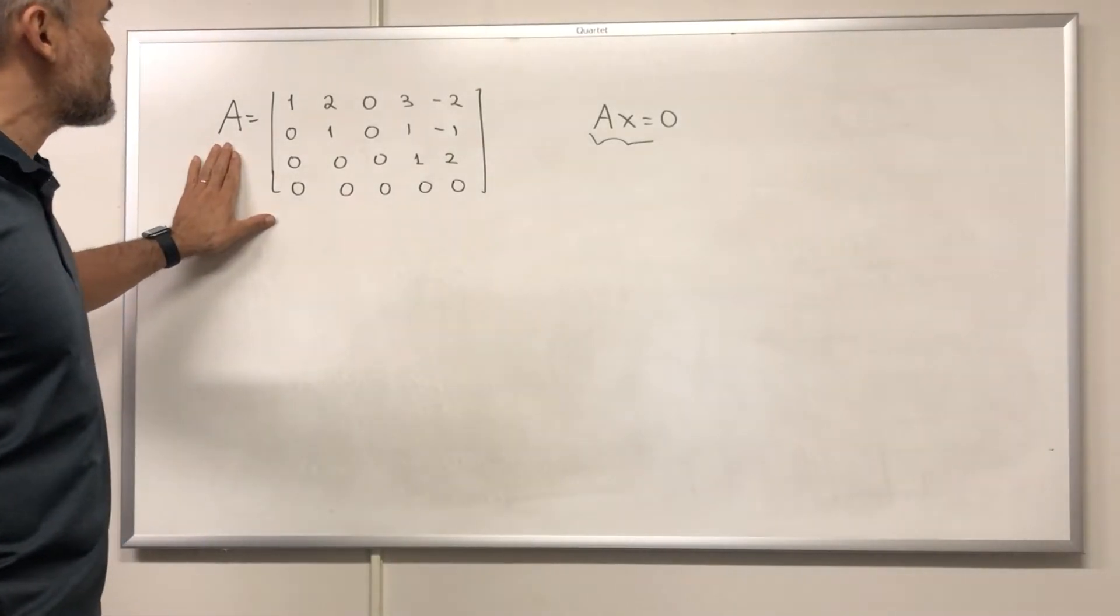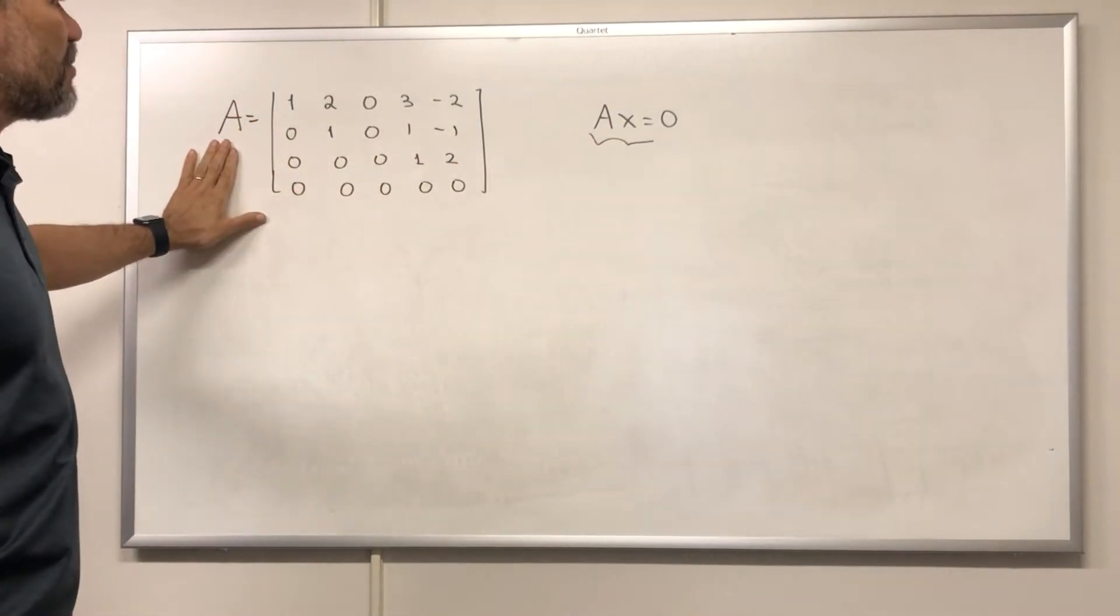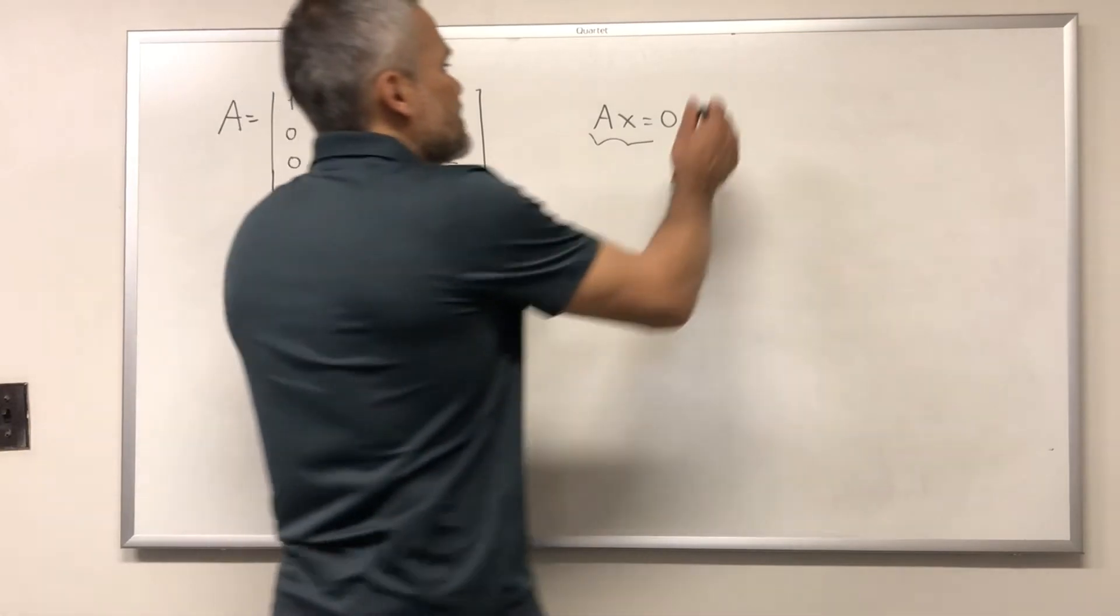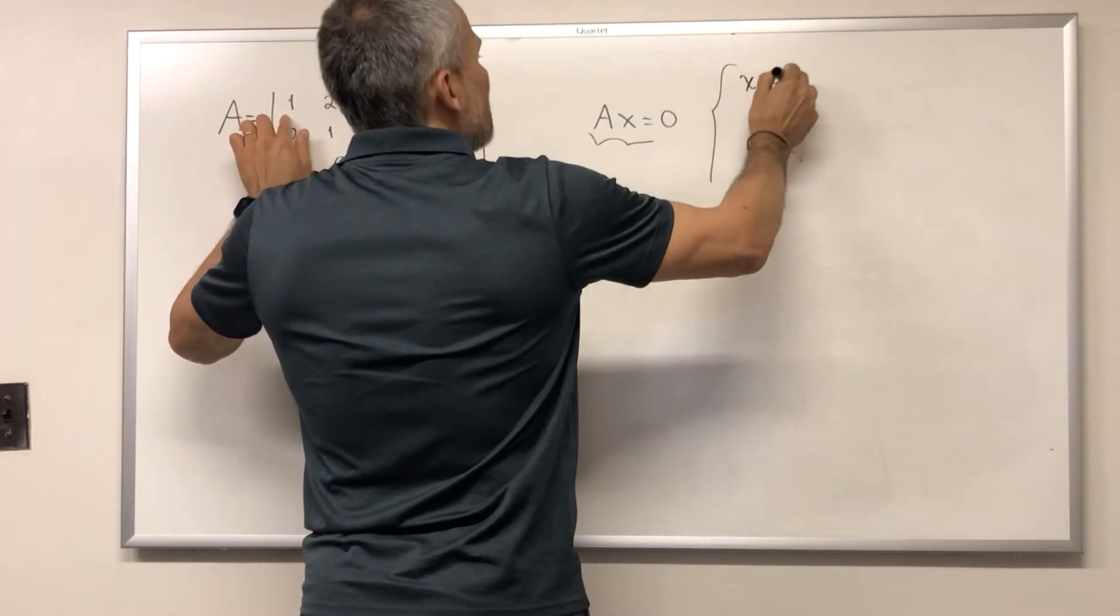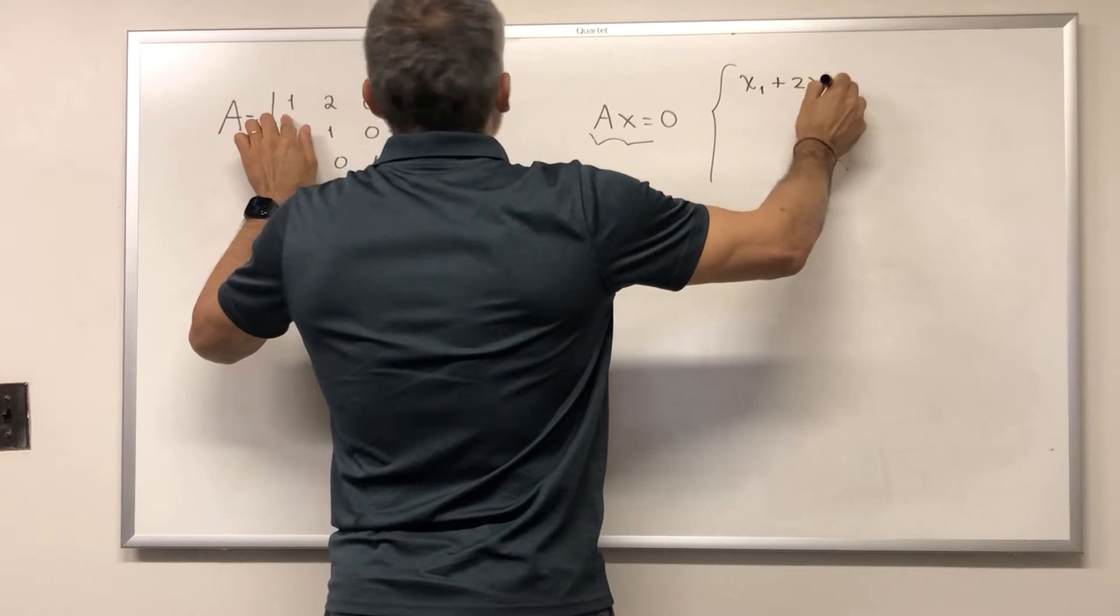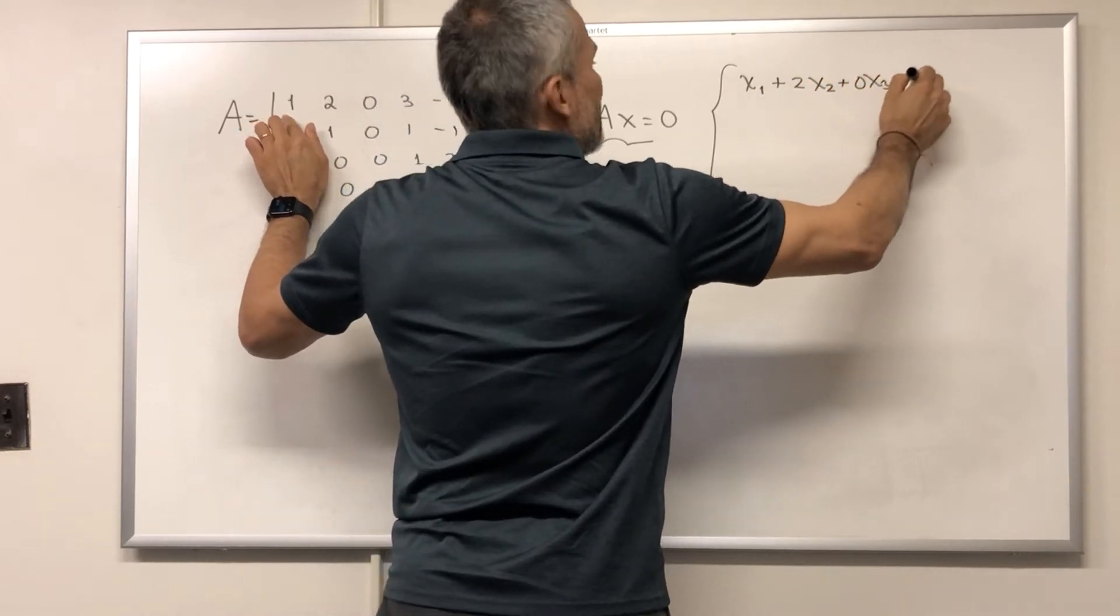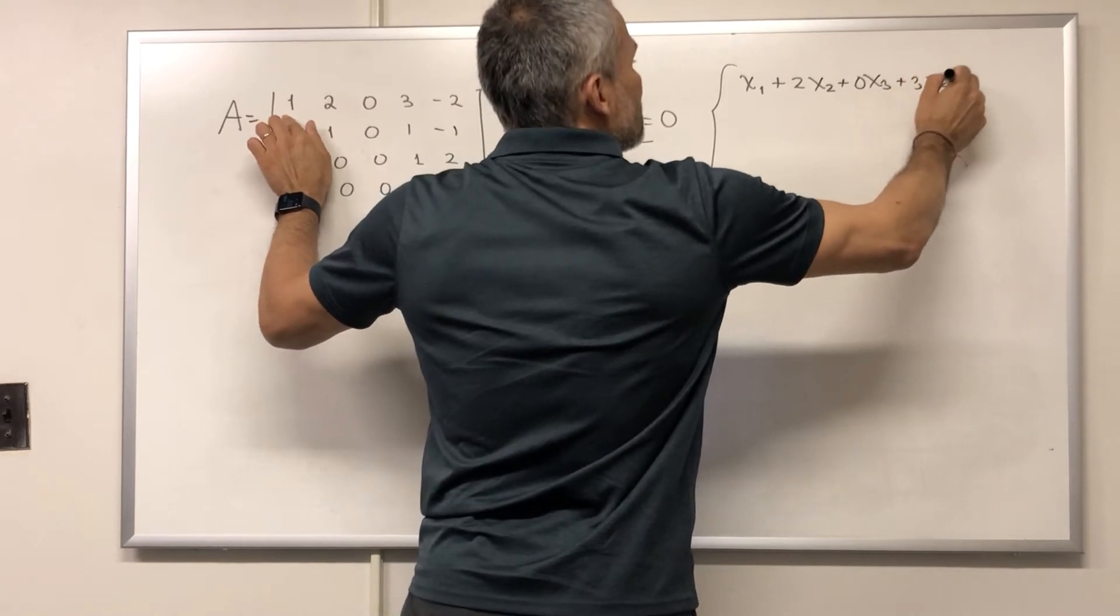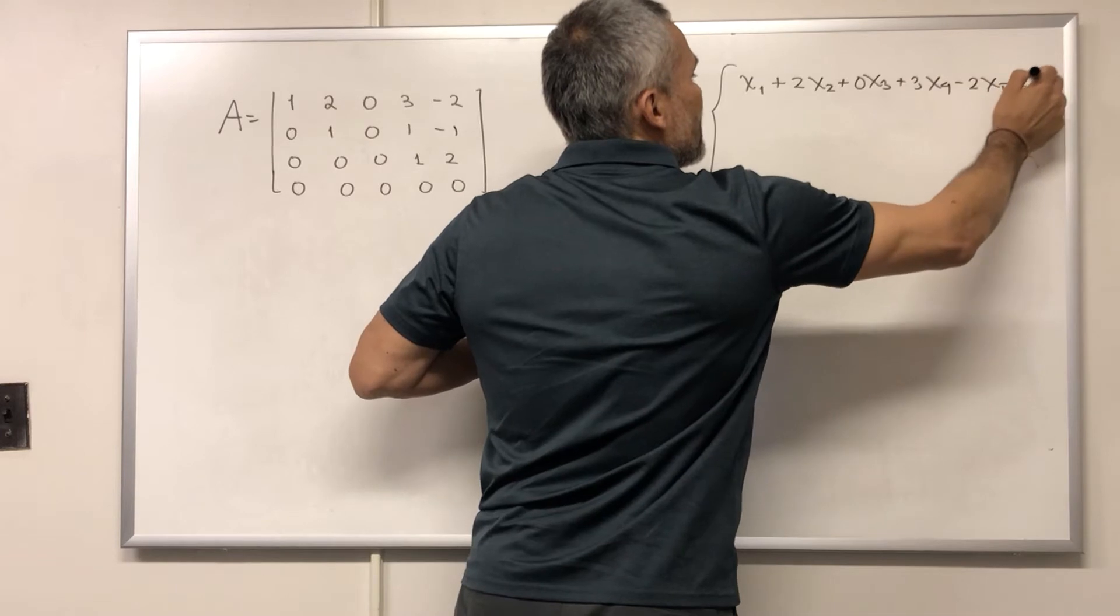Let us solve the homogeneous system which is given of the form AX equals 0, where this is the matrix A. Remember that that system is this one. We have X1 plus 2X2 plus 0X3 plus 3X4 minus 2X5 equals 0.